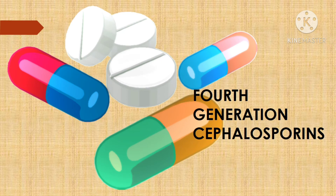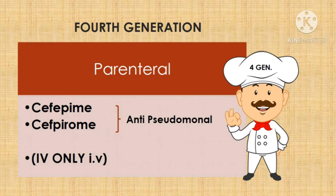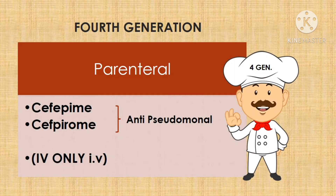Now we will discuss about fourth generation cephalosporins. Fourth generation cephalosporins are associated with 2 P's. The first P stands for parenteral — these drugs are given through the parenteral route only. The second P stands for anti-pseudomonal activity, which the fourth generation cephalosporins possess.